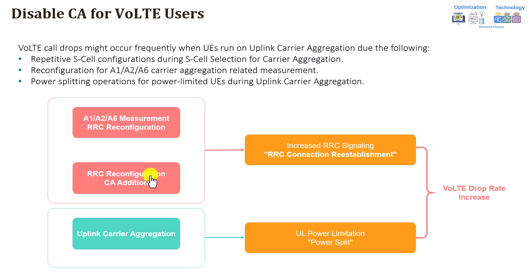In general, if you have multiple carrier aggregation — 2, 3, or 4 carriers — you require repetitive secondary cell configuration, addition, and removal. This can result in failures where, during a call, the UE is trying to add a secondary or third cell, and somehow there are failures in that process. This increases the probability of RRC reestablishment, which might lead to a call drop as well.